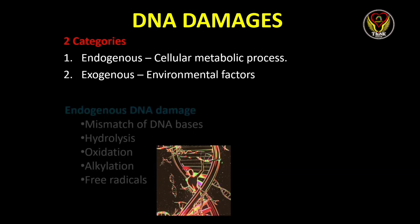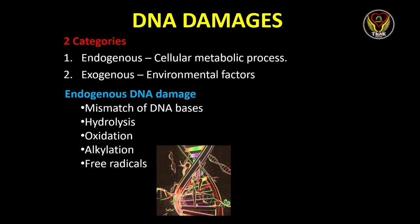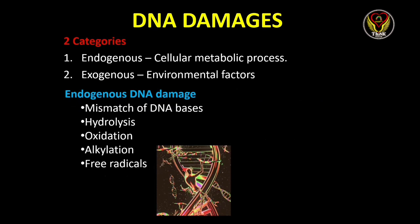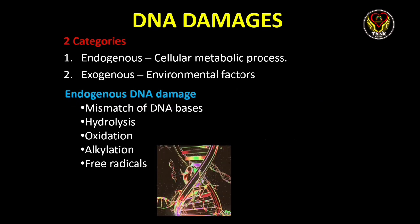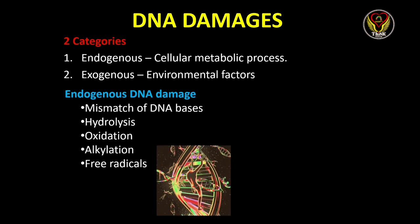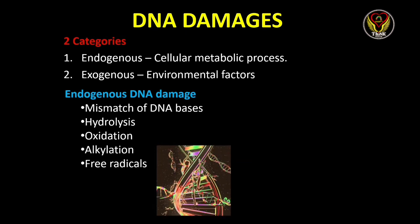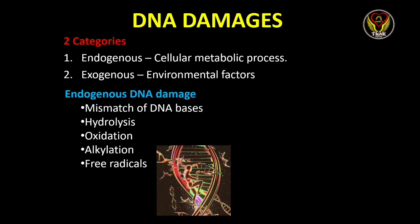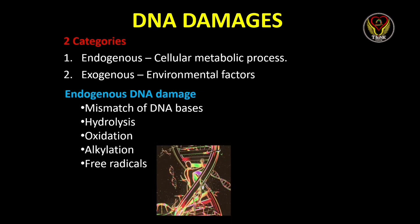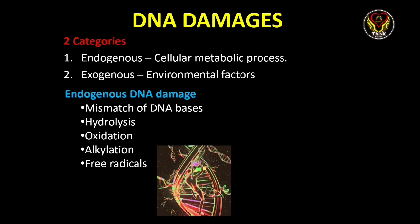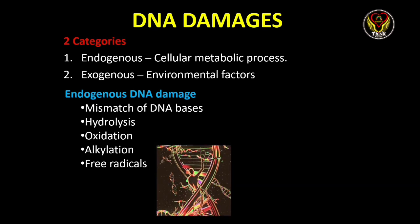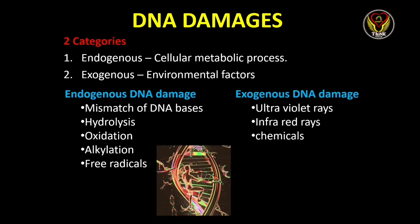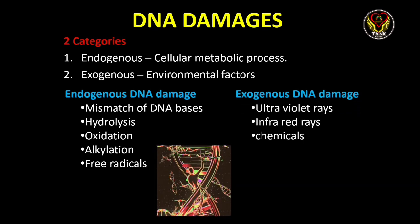Now let's see what are the major damage processes occurring in endogenous and exogenous types. In endogenous type, the first major process is mismatch of DNA bases — we know that A always pairs with T and G always pairs with C, but sometimes there may be a mismatch in this pairing causing DNA damage. Other chemical reactions like hydrolysis, oxidation, alkylation, and production of free radicals can also cause damage. In exogenous type, external factors like ultraviolet rays, infrared rays, and chemicals like mutagens cause damage to the DNA.